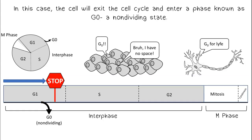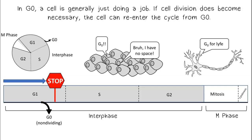In this case, the cell will exit the cell cycle and enter a phase known as G0, a non-dividing state. In G0, a cell is generally just doing a job. If cell division does become necessary, the cell can re-enter the cycle from G0.